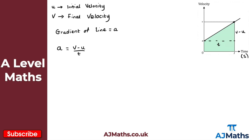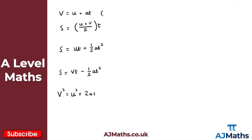So the gradient of this line is v minus u all over t, which equals the acceleration. From here, I'm going to rearrange this and make v the subject — this will give us our first SUVAT equation. Multiplying through by t gives at equals v minus u, and adding u to both sides gives us v equals u plus at. That's equation one.